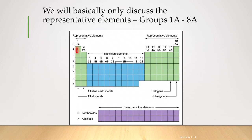So if you take the representative elements, the first column, which is the first group, they have a tendency to donate only one electron.